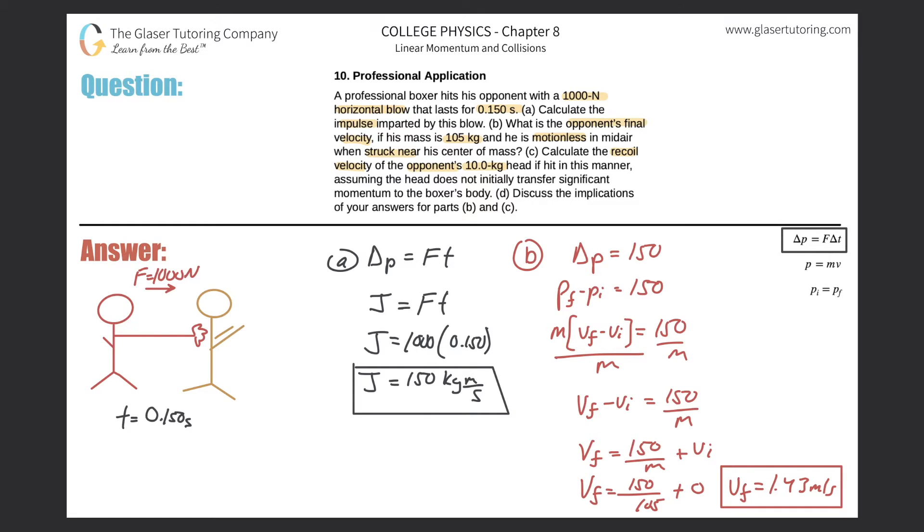Calculate the recoil velocity of the opponent's 10 kilogram head if it is hit in this manner, assuming his head does not initially transfer significant momentum to the boxer's body. Basically it's the same thing. The change in momentum is still the same because the boxer is applying a 1000 Newton force over 0.15 seconds.